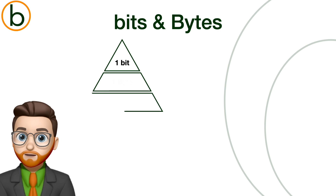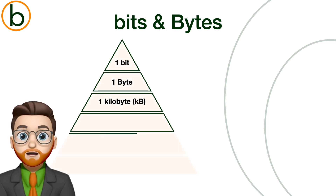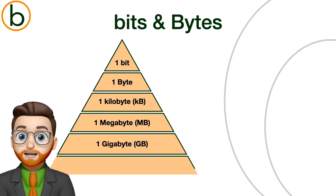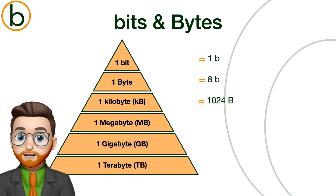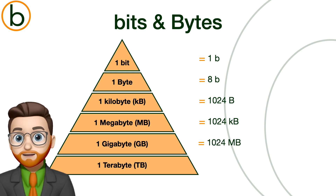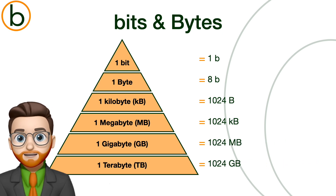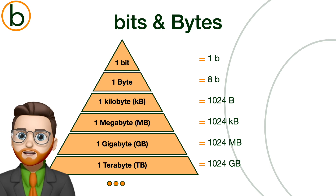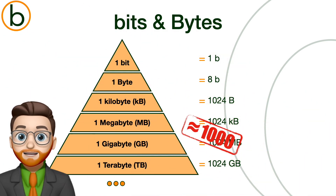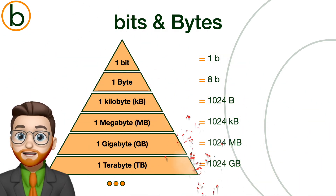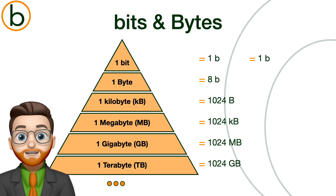This method of conversion works exactly the same for all types of bytes: 1024 kilobytes is a megabyte, 1024 megabytes is a gigabyte, 1024 gigabytes is a terabyte, and so on. Now to be honest, the number 1024 is often rounded down to just 1000, simply because it's easier. But know that the only accurate and correct way is to calculate with 1024.